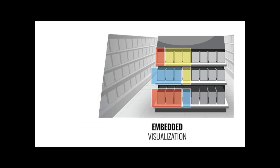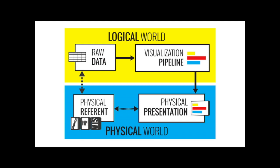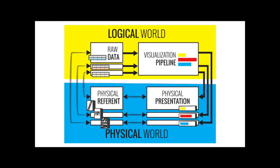We could reduce this level of indirection even further by using an augmented reality display to overlay sales data on top of individual products, or even do something more physically embedded — using illumination or actuation of the shelves themselves to communicate some of this data. For the more nuanced embedded model, instead of thinking about one big representation, we might think about a number of individual smaller presentations of data — individual marks or small visualizations, each associated with a single referent — allowing us to consider the indirection between each referent and its presentation independently.